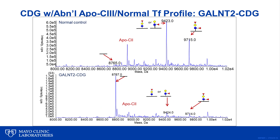Here we have a CDG with an informative APOC3 profile but normal transferrin and N-glycan analysis. Compared to the normal profile, a GALNT2 CDG profile has a much higher asyalo to disyalo ratio, and the fully glycosylated APOC3 is low, indicating defective post-translational O-linked glycosylation of APOC3.